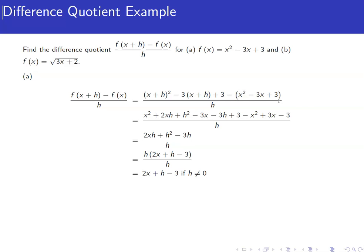So we're going to simplify this and see if we can factor out an h. Multiplying out the x plus h squared, we'll get x squared plus 2xh plus h squared. We're going to FOIL this. Distribute the negative 3 through, so we get minus 3x minus 3h, and then plus 3,